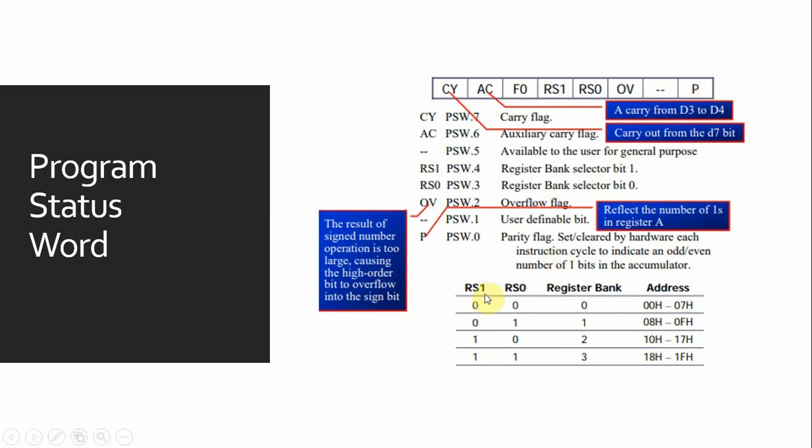Here you can see that RS1 and RS0 are the register bank selectors. These are the register banks. When both are 0, register bank 0 is selected, and addresses will be from 00h to 07h.